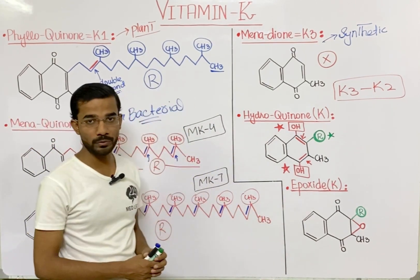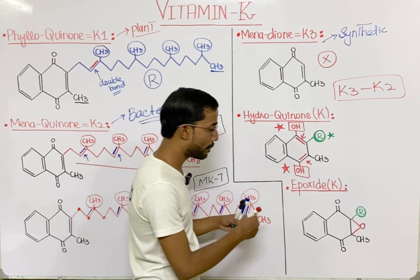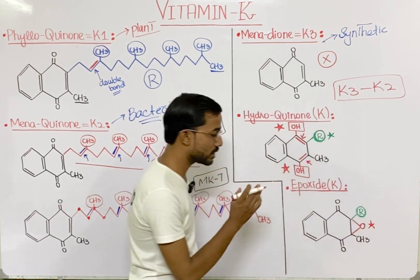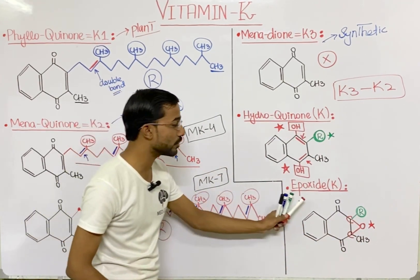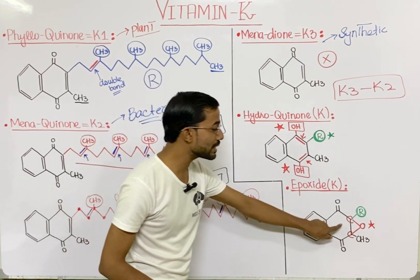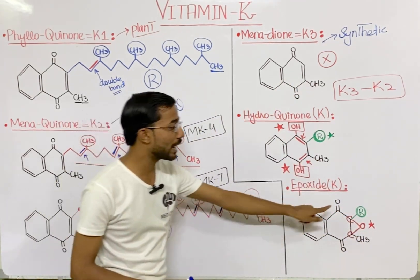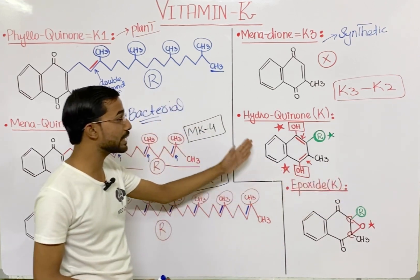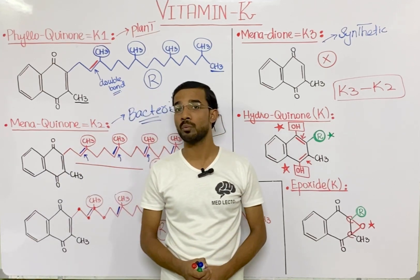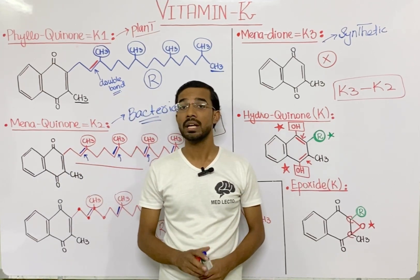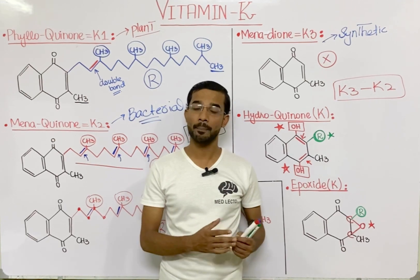Last is the epoxide form of vitamin K. In the epoxide the ring will be similar, but the difference is the presence of oxygen directly attached to the carbons of the ring — the double bond is removed and you will see the attachment of oxygen, while the alkyl group remains similar. These are the different hydroquinone and epoxide forms of vitamin K, which are helpful in the post-translational modifications of proteins — we will discuss that in the upcoming lecture.